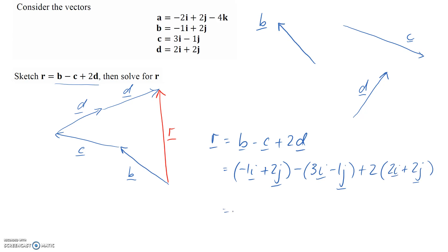Now we'll expand out these brackets. The first one's easy. The next one has a negative, so it's negative 3i. And then we've got a double negative here, so plus 1j. And then we get 4i plus 4j.